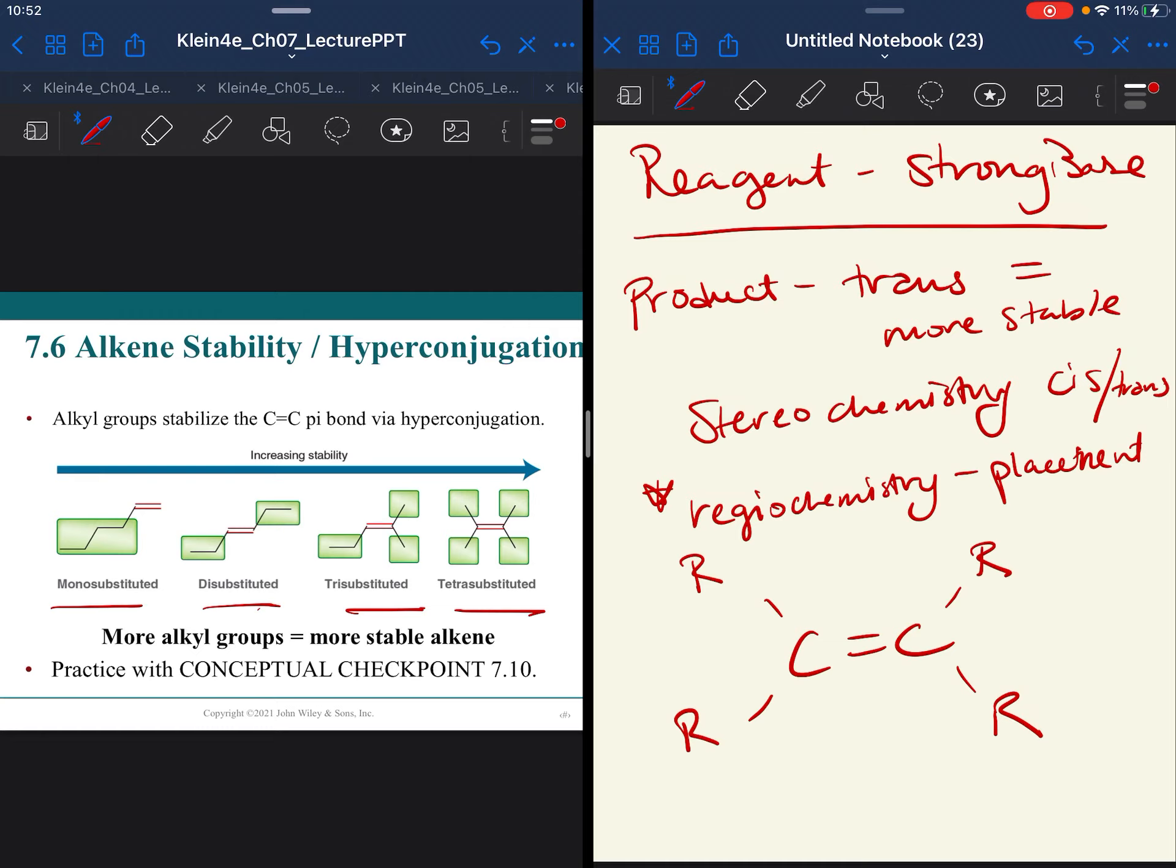The more substituted double bond is the more stable alkene. More alkyl groups equals more stable.